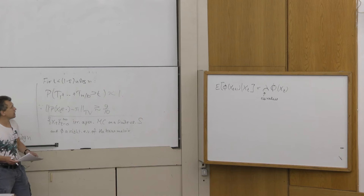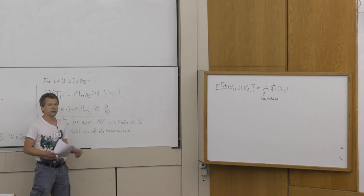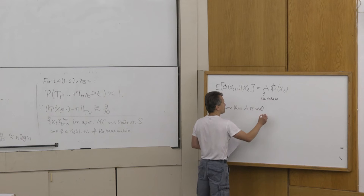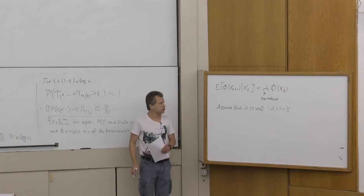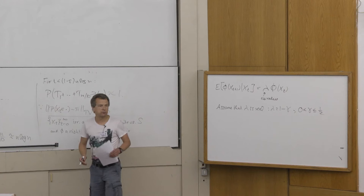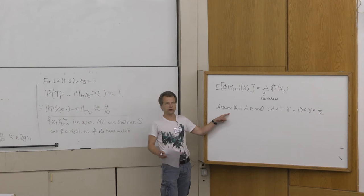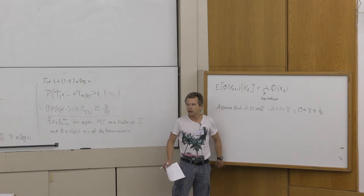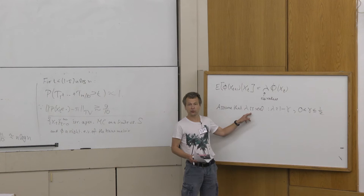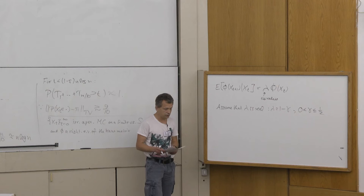To state this result, I'll assume for simplicity that lambda is real. I write it as 1 minus gamma, assuming gamma is at most one half — this is just a technical assumption. It's easier and neater to do this when lambda is real, though you can also do it when lambda is complex. If the Markov chain is reversible, you will always have real eigenvalues, so this is fairly useful anyway.